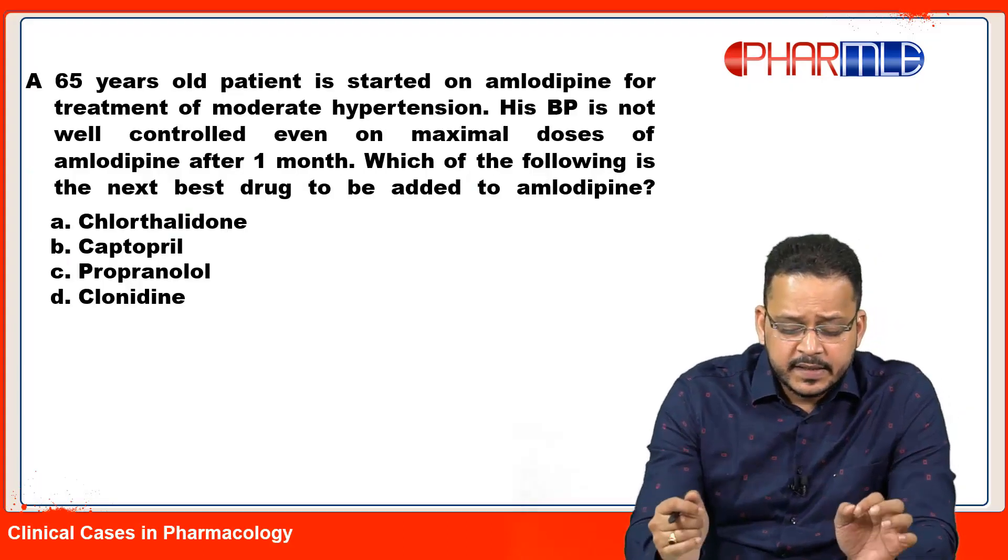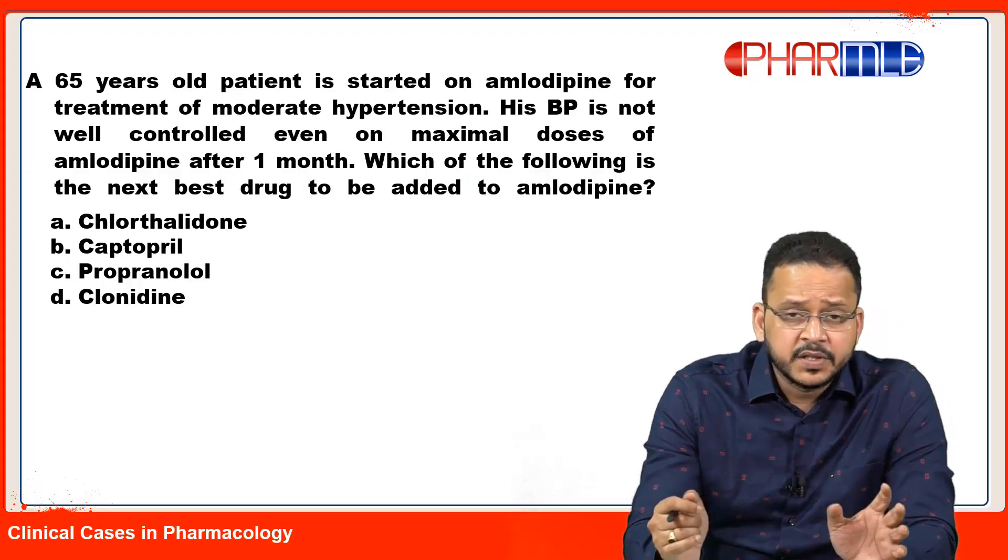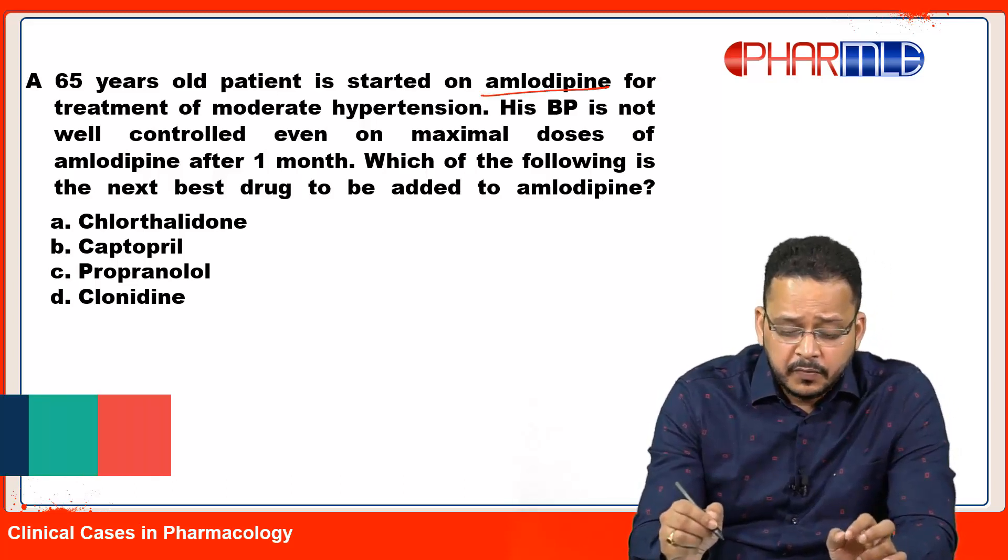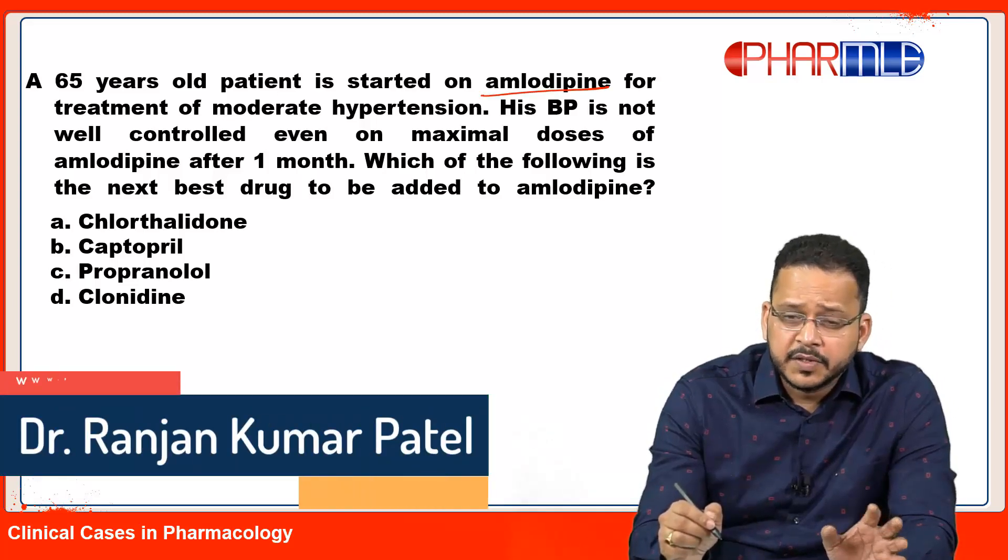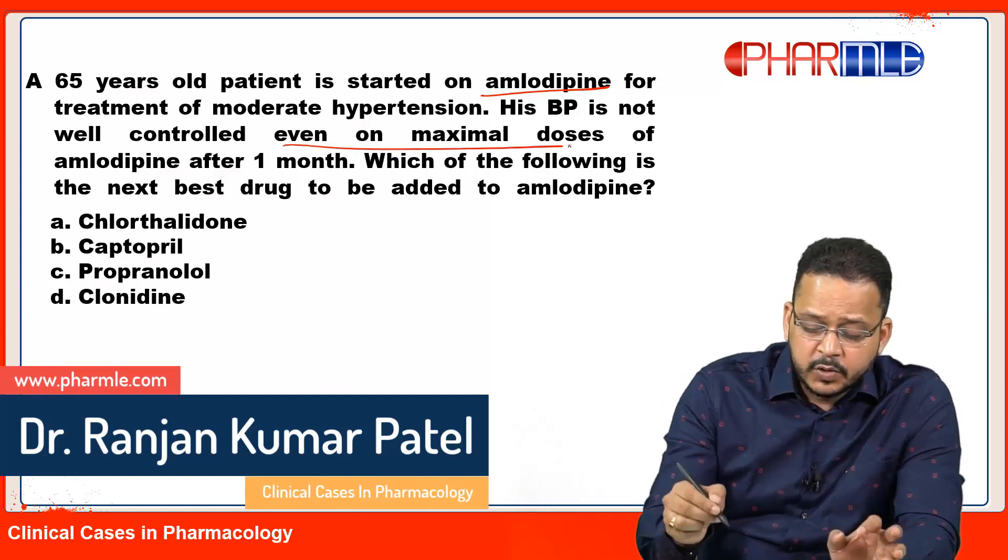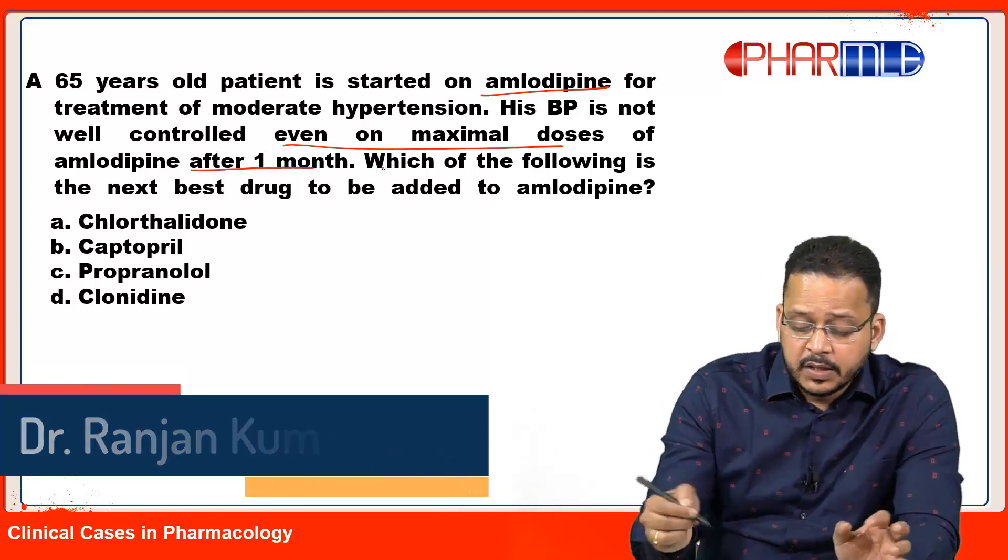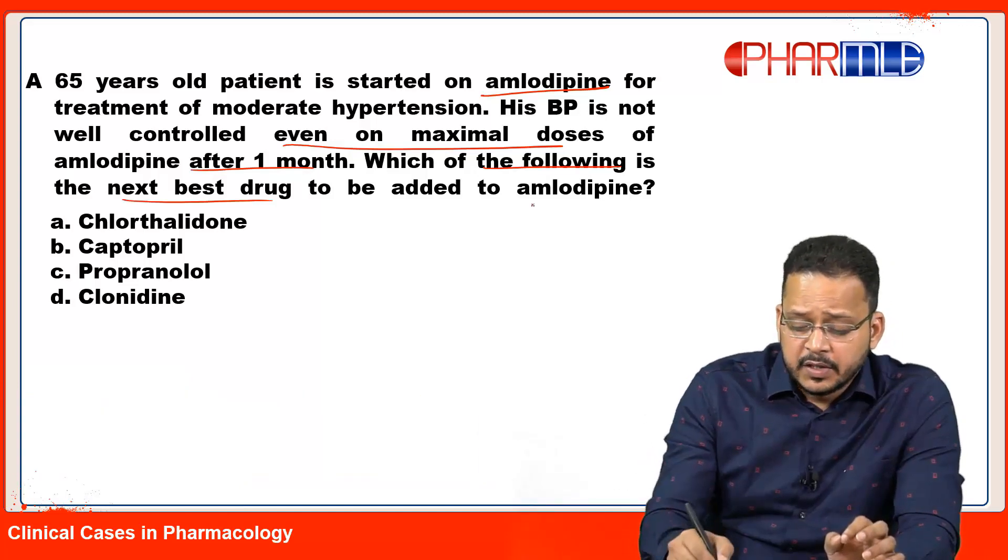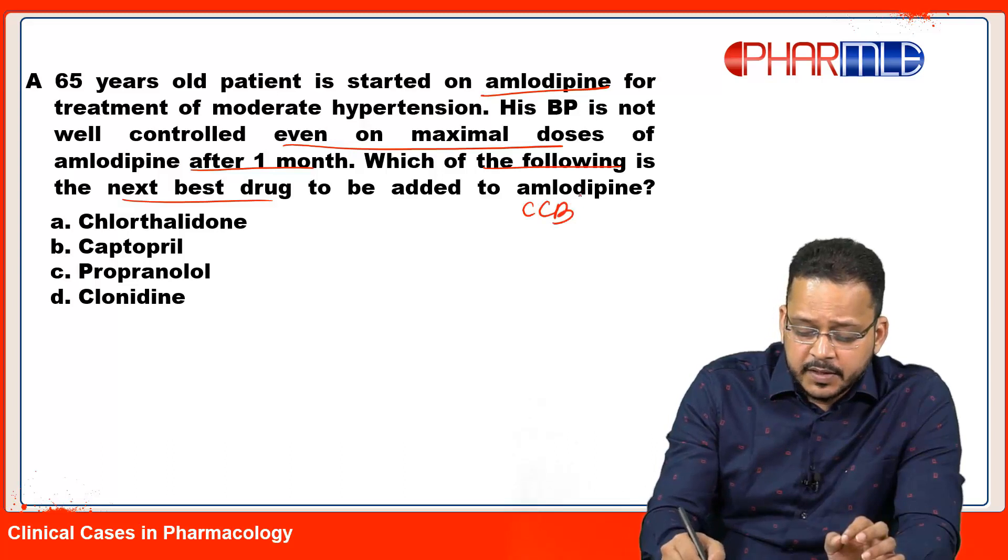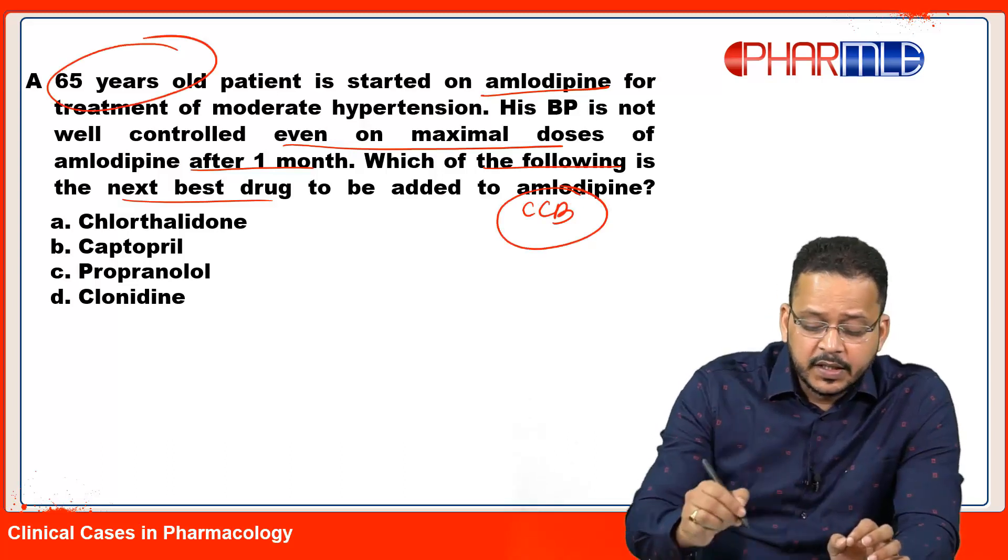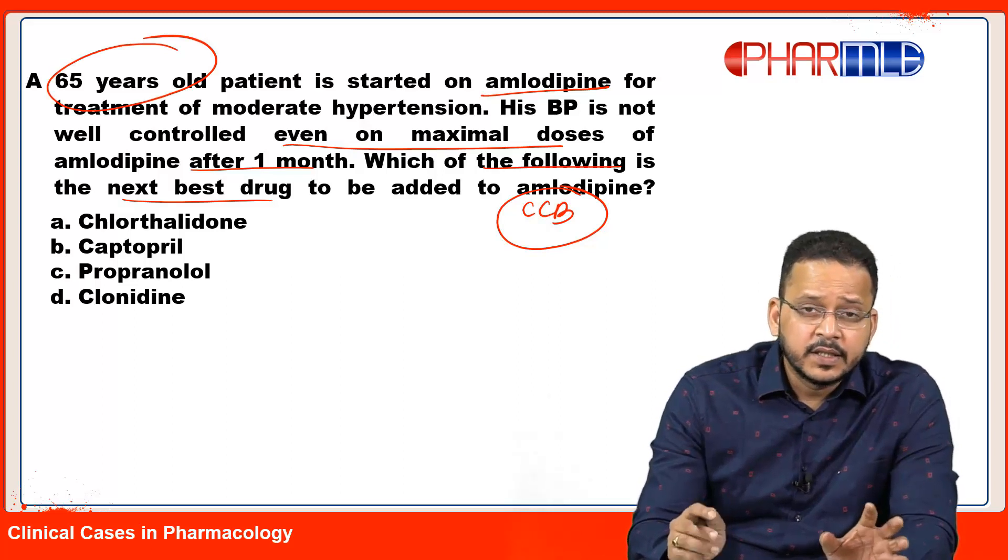This clinical case is of a 65-year-old patient started on amlodipine for moderate hypertension. His blood pressure is not well controlled even on maximal doses after one month. Which of the following is the next best drug to add to amlodipine? Essentially, you have started the patient on a CCB, they're not responding - what is the next best drug to be added?